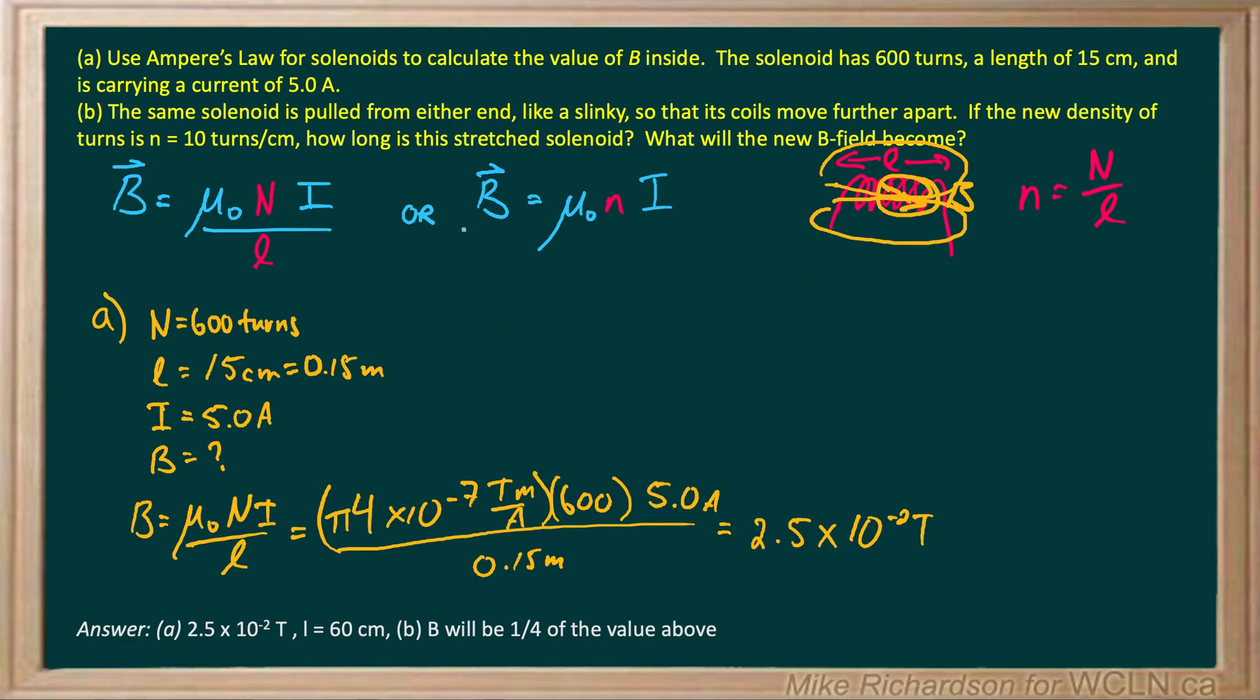Now part B. The same solenoid is pulled from either end like a slinky, so the coils move further apart and the solenoid gets longer. Notice that L is on the bottom of the equation, so as L gets bigger, the magnetic field gets weaker. The density of the windings decreases. The more tightly packed the coils are, the stronger the magnetic field.